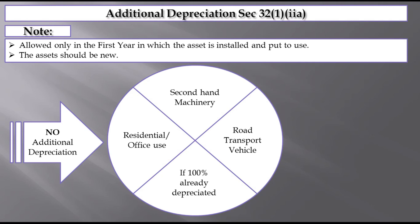Let's discuss the notes about additional depreciation — the rate, the eligible assets, the plant and machinery, and the exclusion of ships and aircraft.